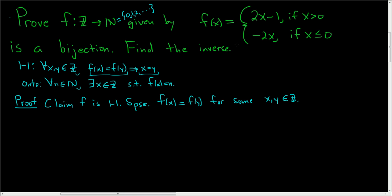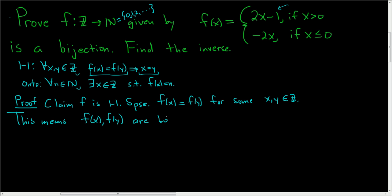If we think about what f is and what it does to x, it might make this proof a little bit easier. f takes x, and if x is positive, it sends it to an odd natural number. And if x is less than or equal to 0, it sends it to an even integer. So saying f(x) equals f(y) means that f(x) and f(y), since they're equal, they're both going to be even or they're both going to be odd.